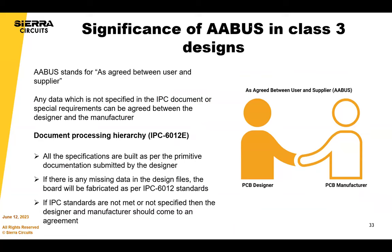If there's something you don't need full Class 3 for but you're particularly concerned about, you can come to an agreement with your fabricator and note it on your drawings. A lot of customers design to Class 3 but may need a waiver to Class 2 for certain annular rings — that's totally fine as long as there's a clear understanding. Having that open dialogue with your fabricator is really important.